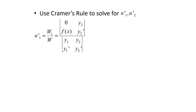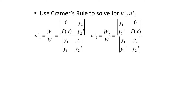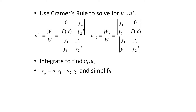Cramer's rule says u1' equals W1 over W, where W is the Wronskian of our two functions y1 and y2. W1 is that same Wronskian but with the first column replaced by 0 in the first row and f(x) in the second row. And u2' equals W2 over W, where for W2 we replace the second column with 0 in the first row and f(x) in the second row. We compute these Wronskians to get u1' and u2', integrate to find u1 and u2, plug them into yp, and then form the overall solution y = yc + yp.